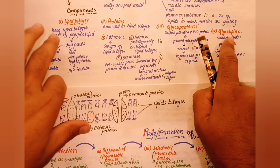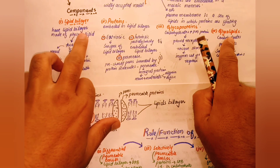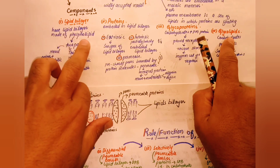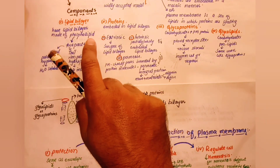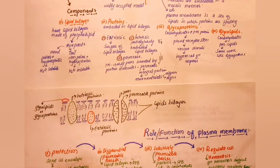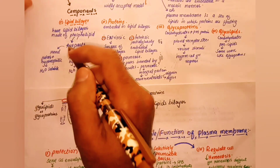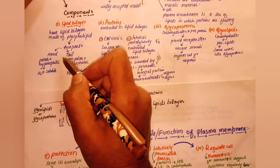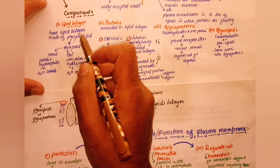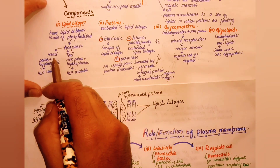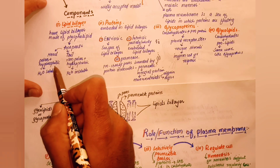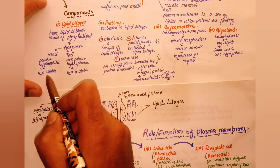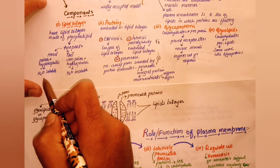The lipid bilayer means it is made of phospholipids. Each phospholipid molecule has two parts: a head and a tail. The head is polar and hydrophilic, while the tail is non-polar and hydrophobic.